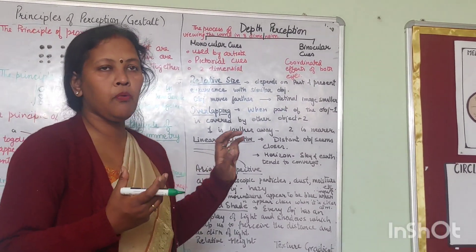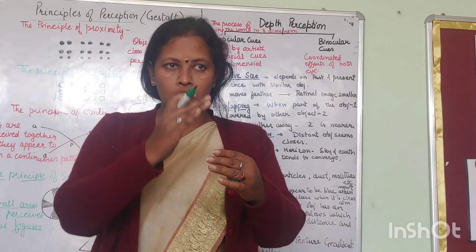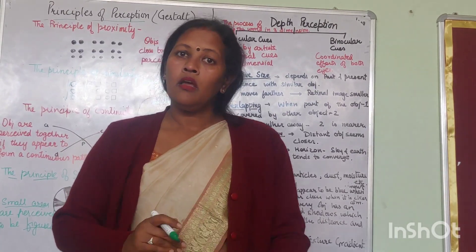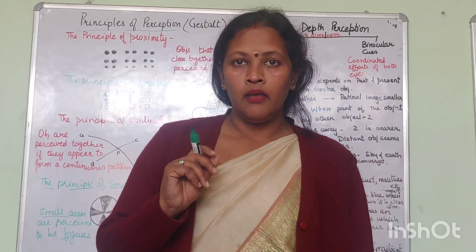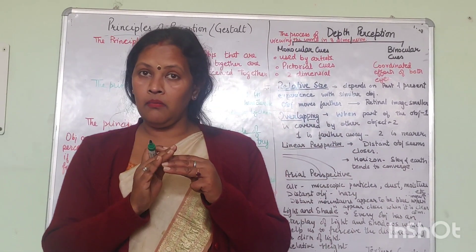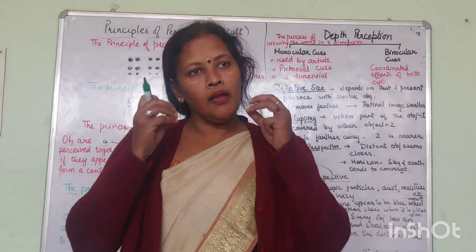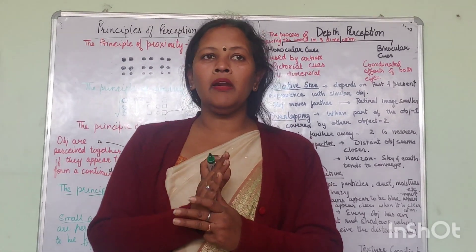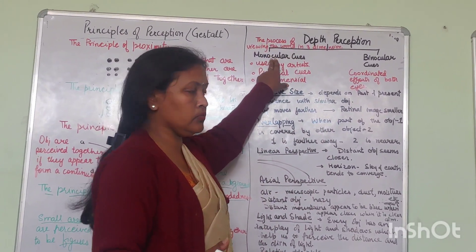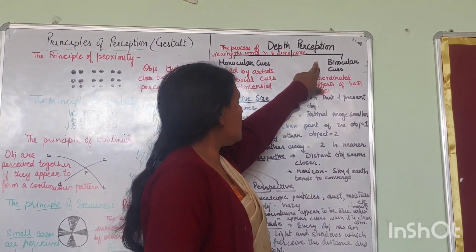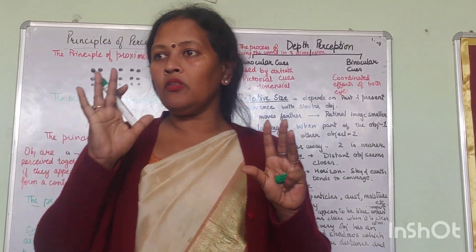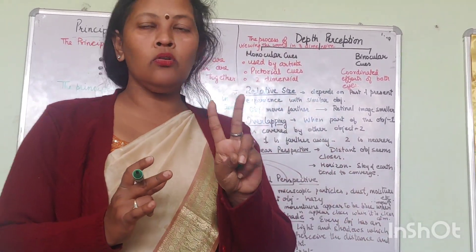Now the important perception is depth perception. Depth is height, length, breadth — and depth is the z-axis, inside the thing. Our retina is in 2D. For depth perception — the process of viewing the world in three dimensions — we have two clues: monocular clues and binocular clues.